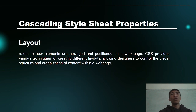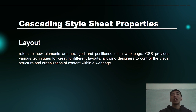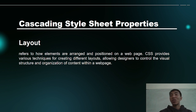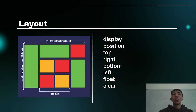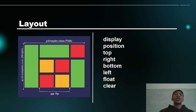I also discussed layout, which refers to how elements are arranged and positioned on a web page. CSS provides various techniques for creating different layouts, allowing designers to control the visual structure and organization of content. Under layout, we have the properties: display, position, top, right, bottom, left, float, and clear.